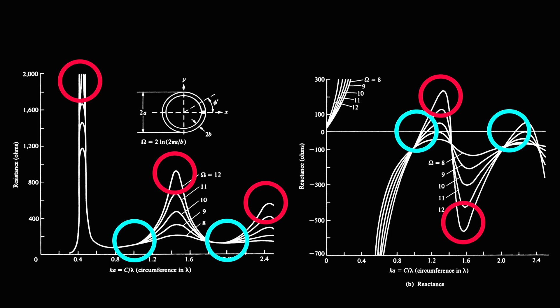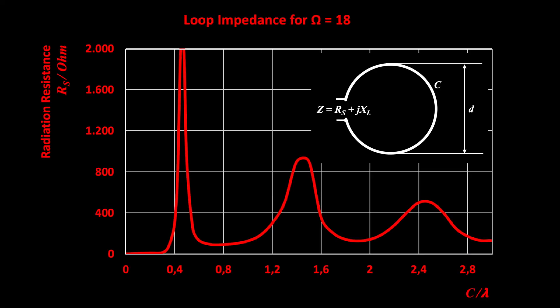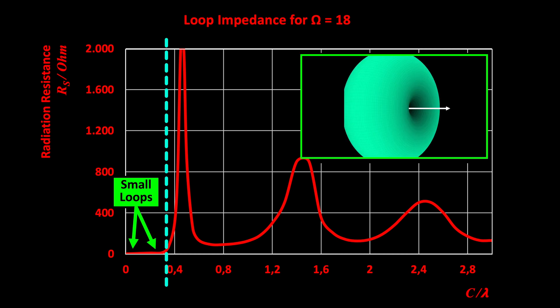2 m diameter and 1 mm wire thickness are resulting in omega equal to 18. For our magloop design, we were only considering this frequency range.